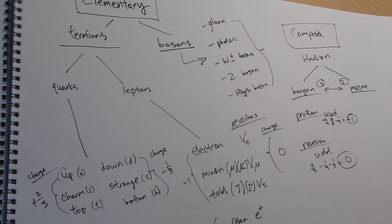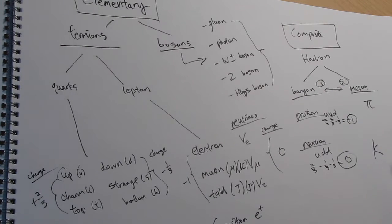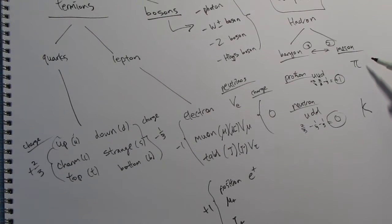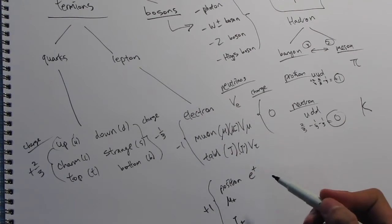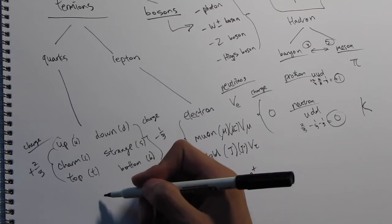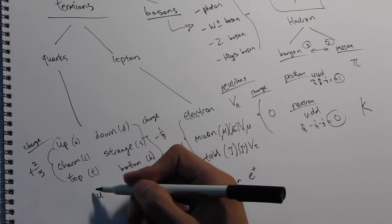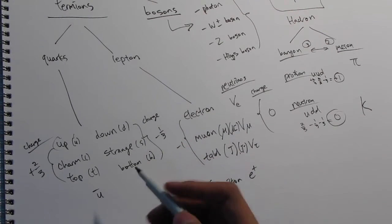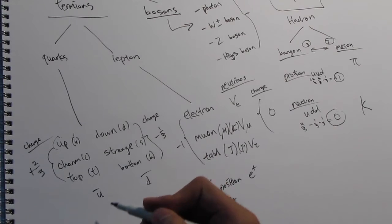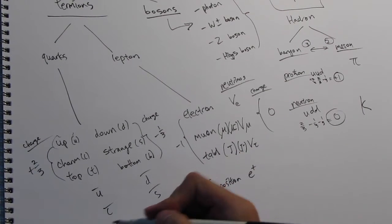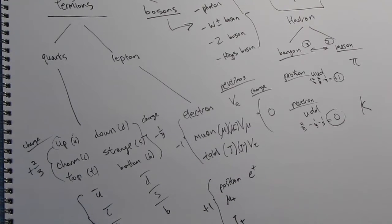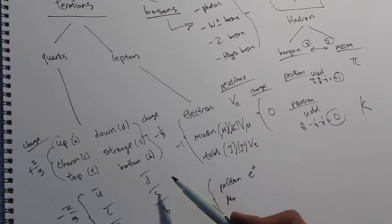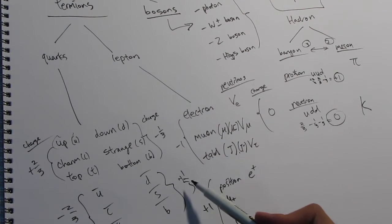Now we go into mesons — these are the less obvious ones. For example, there are pions and kaons. When dealing with mesons, we have to go back to the quarks. Just as there are antiparticles for leptons, there are antiparticles for quarks as well: anti-up, anti-down, anti-charm, anti-strange, anti-top, and anti-bottom. These have the opposite charge, so anti-up is negative two-thirds and anti-down is positive one-third.